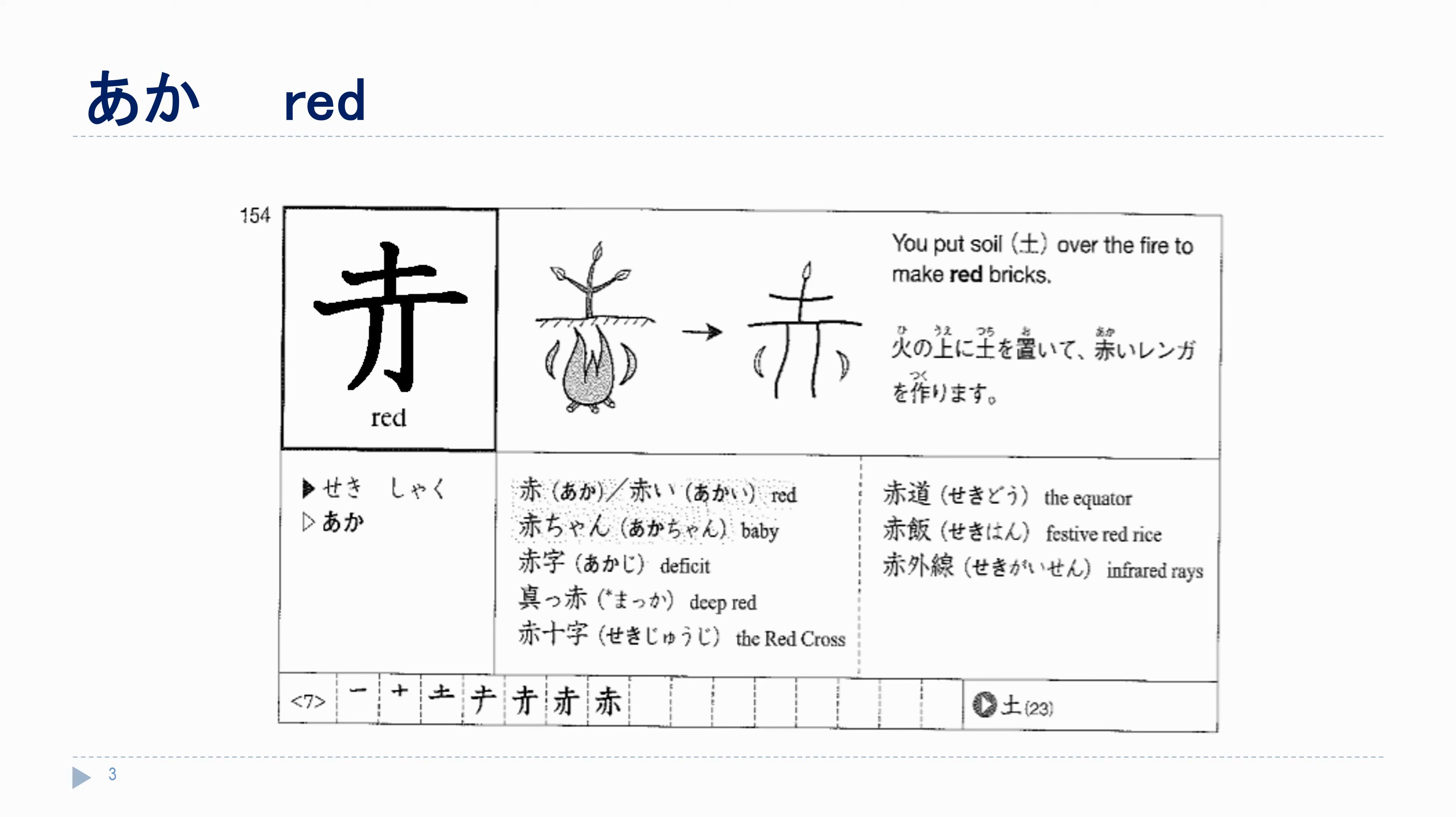We write it with いちにさんよんごろくななはち. The first stroke should be a bit shorter than the third one.